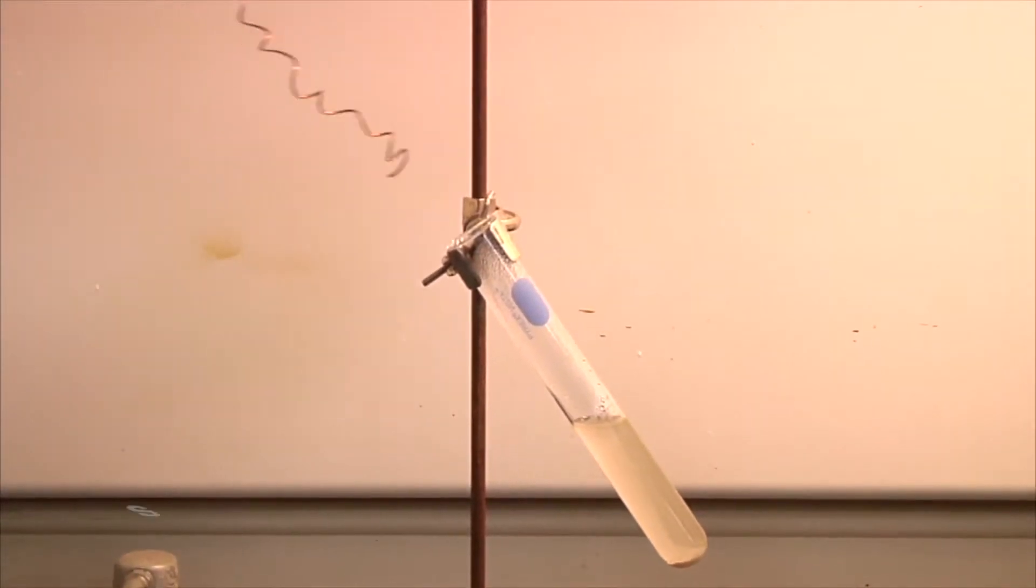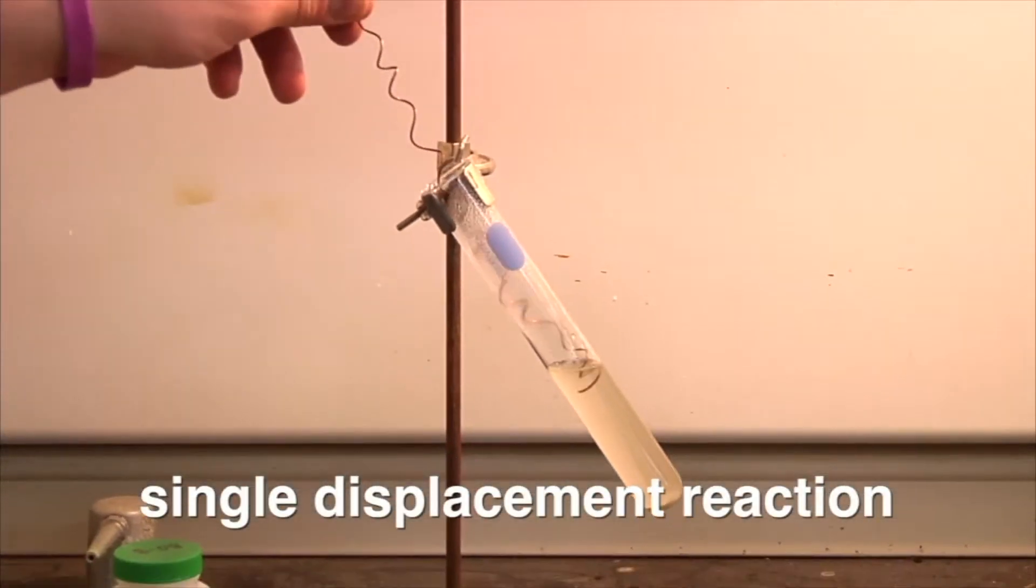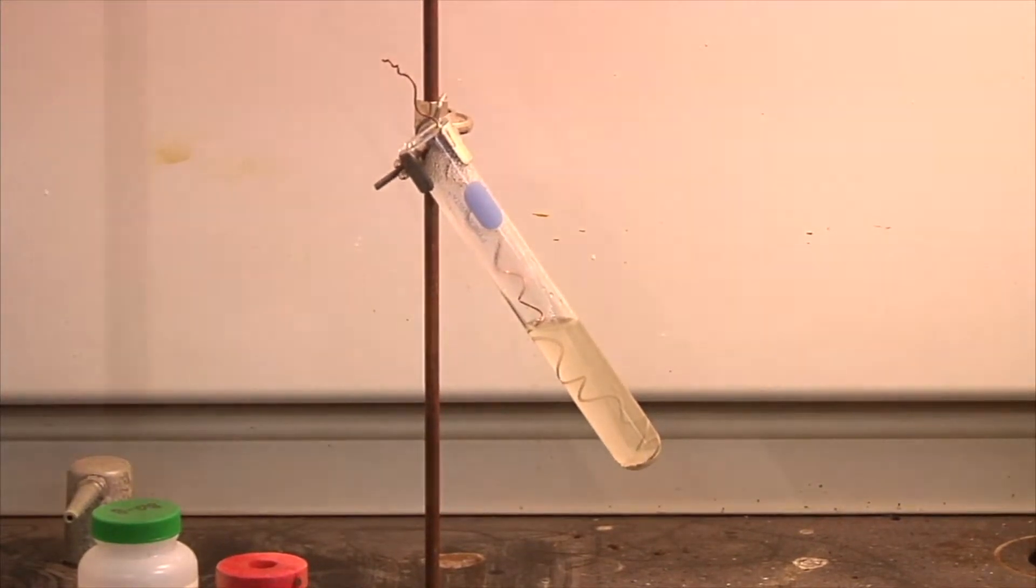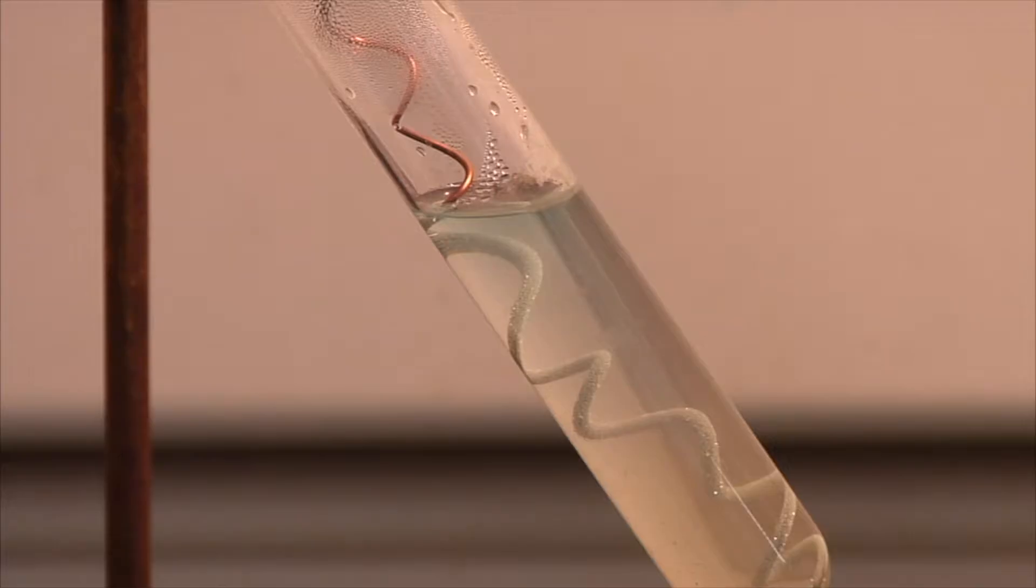An example of a single displacement reaction occurs when a copper wire is suspended in a solution of silver nitrate. The copper displaces the silver, which forms thin crystals of silver precipitate, while the solution turns blue due to the copper nitrate.